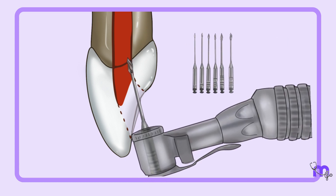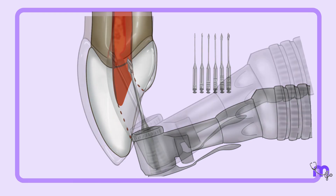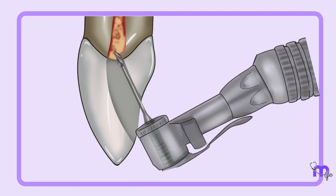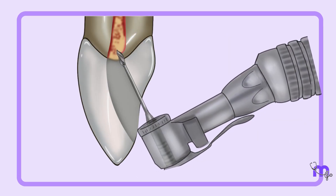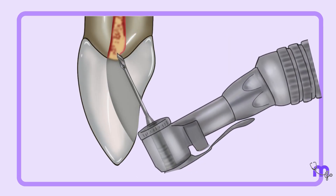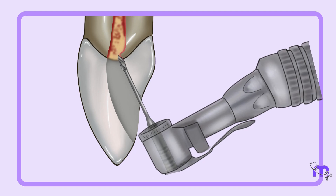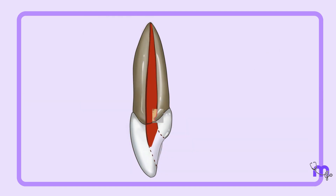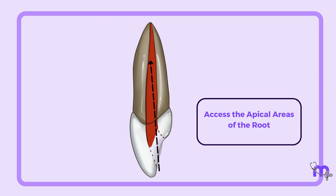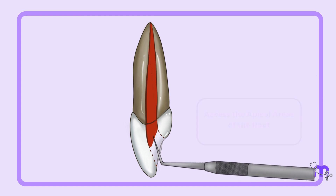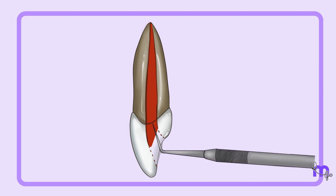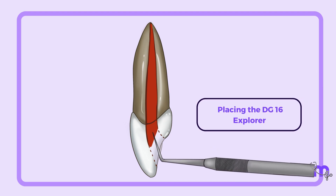In chronological order, the palatal shoulder was also removed by moving it inside-out using light strokes. Once the palatal shoulder had been removed, I could directly access the apical areas of the root and verified this by placing the DG-16 Explorer.